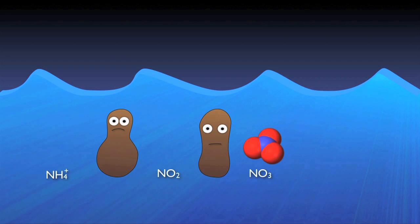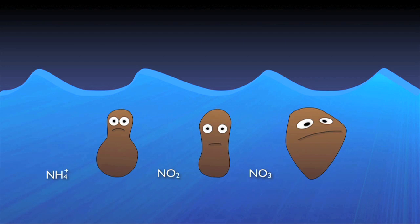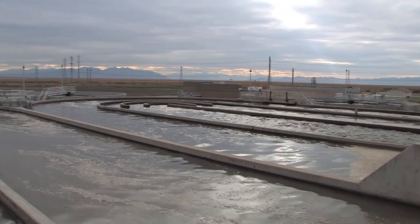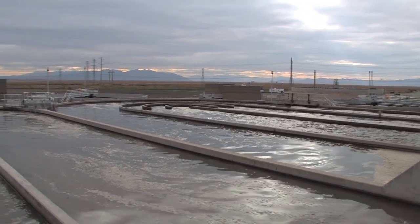As dissolved oxygen is depleted by the nitrifiers and other organisms in the basin, other specialized heterotrophic bacteria — denitrifiers — are able to thrive by using the oxygen attached to the nitrate molecules for respiration, creating nitrogen gas as a byproduct. The nitrogen gas then simply bubbles out of the water into the atmosphere. Let's go back to the beginning and take a closer look at each of these important steps in the nitrogen removal process.